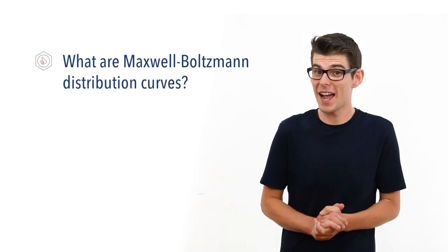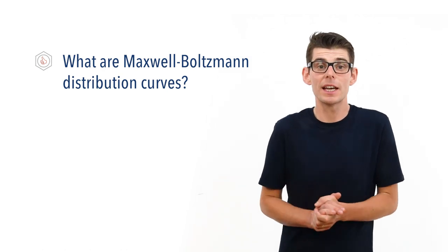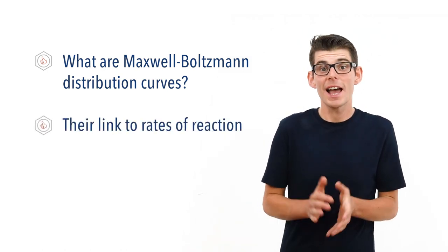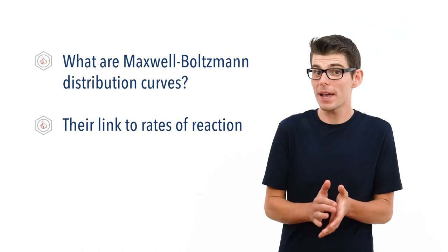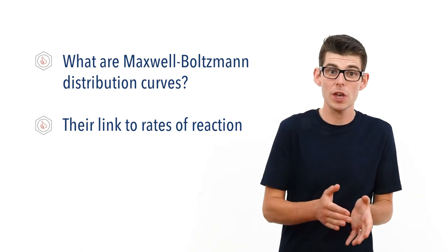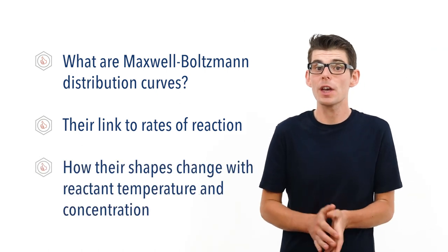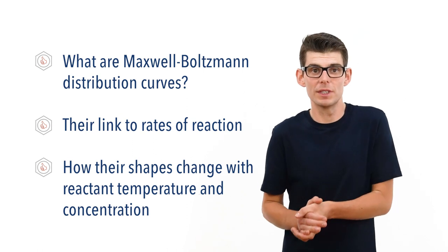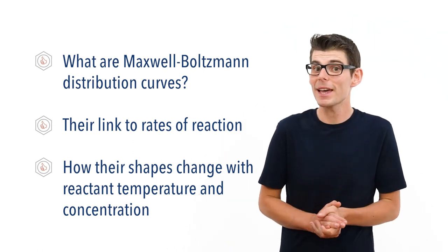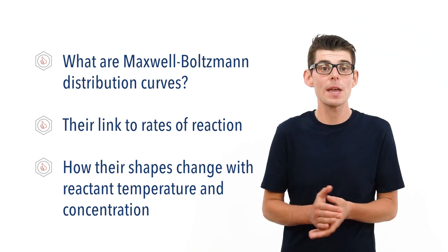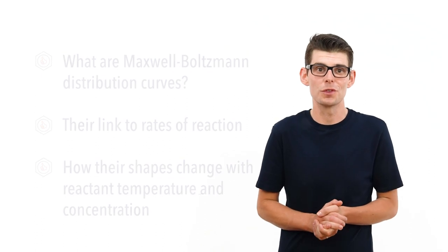Hello, Matt here from chemistrystudent.com. In this video, we're going to look at Maxwell-Boltzmann distribution curves. We're going to talk about what they actually are, how they can be used to help study rates of reactions, and look at how the shapes of these curves change depending on the temperature and concentration of molecules in a system. We will also look at the impact of using a catalyst on the shape of a Maxwell-Boltzmann distribution curve.